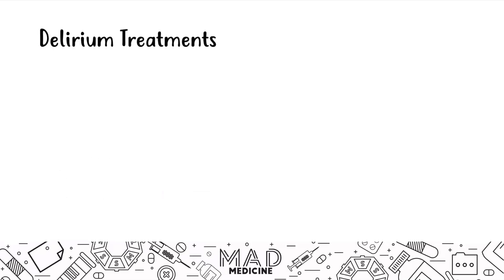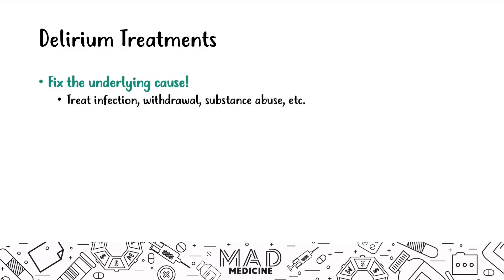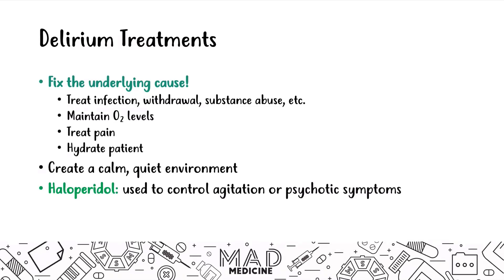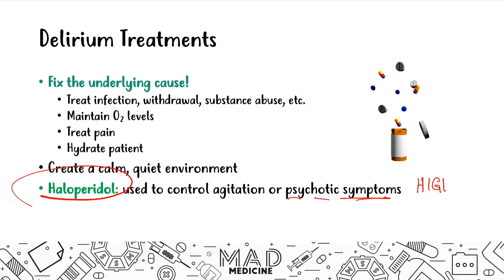When it comes to treatment for delirium, it's pretty straightforward — you treat the underlying cause. Get rid of the infection or substance abuse and the delirium resolves. While doing that, you want to maintain O2 levels, treat pain (especially in post-surgical patients), keep the patient hydrated, and ensure a calm and quiet environment. If pharmacotherapy is needed, the drug of choice is haloperidol, an antipsychotic, used to control agitation and psychotic symptoms. This is high yield.